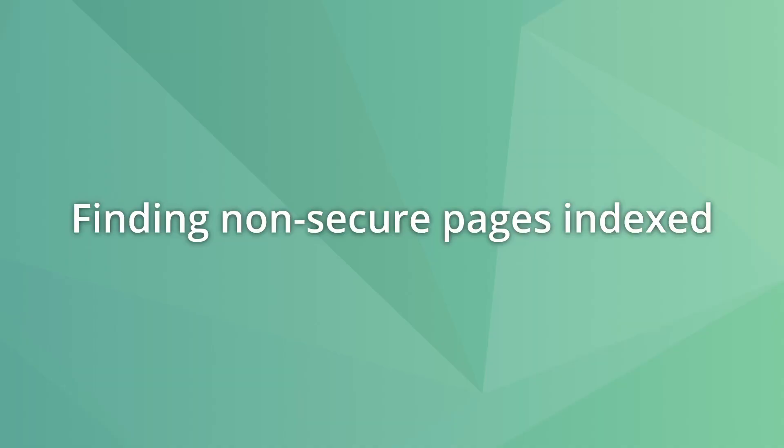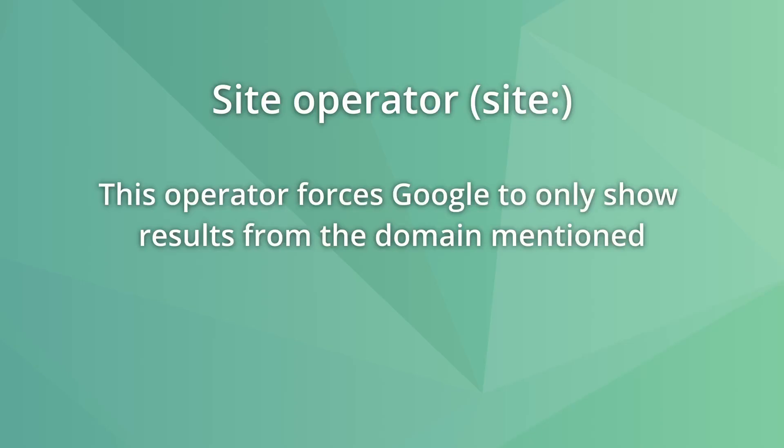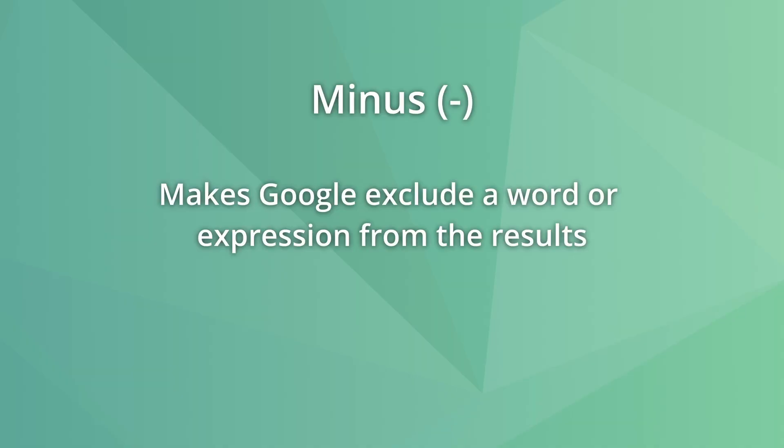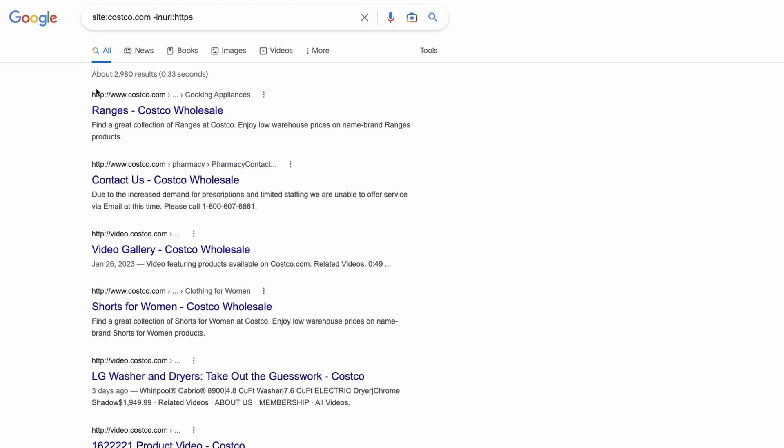You can use search operators to find non-secure pages. Website security is a serious topic, so we should only allow indexing of HTTPS pages. To quickly find if Google is indexing non-secure pages from a website, use the query: site:domain -inurl:https. The site operator forces Google to only show results from the domain mentioned, the minus operator excludes search results, and the inurl operator shows only pages with a specified word in the URL. Combined, you can find non-HTTPS pages indexed by Google for a specific website.